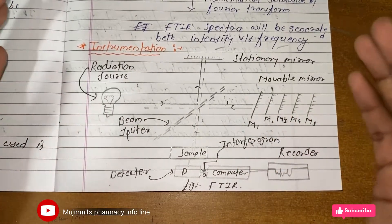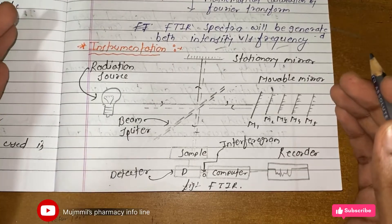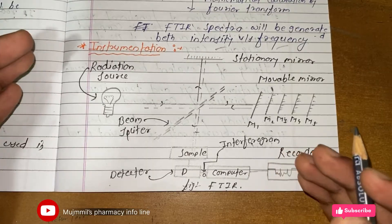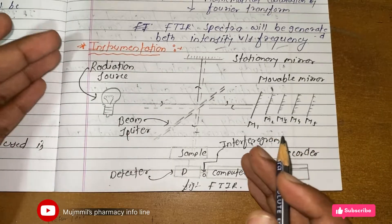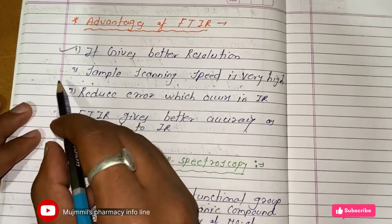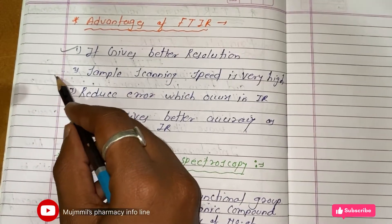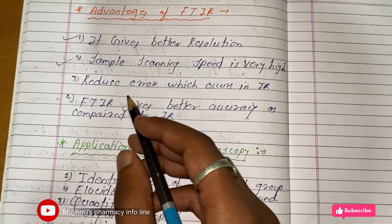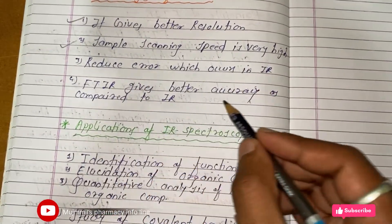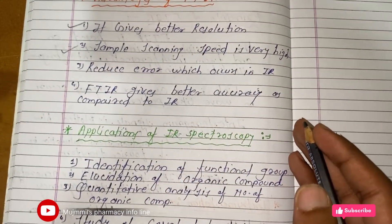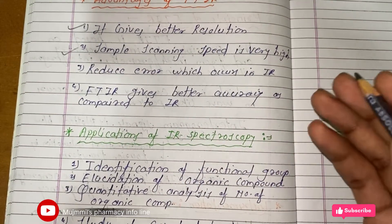A five-mark question may be asked: write a note on FTIR with instrumentation, advantages, and applications. The advantages of FTIR are: it gives better resolution than IR spectroscopy; the sample scanning speed is very high compared to IR; it reduces errors that occur in IR; and FTIR gives better accuracy compared to IR spectroscopy.